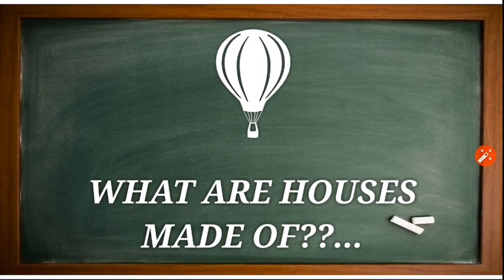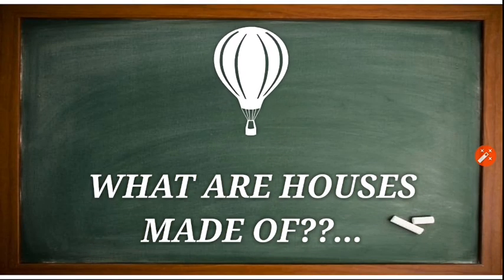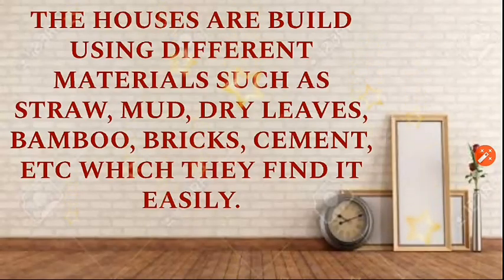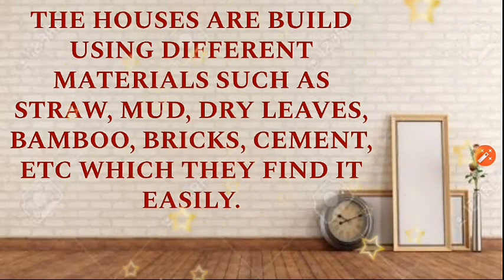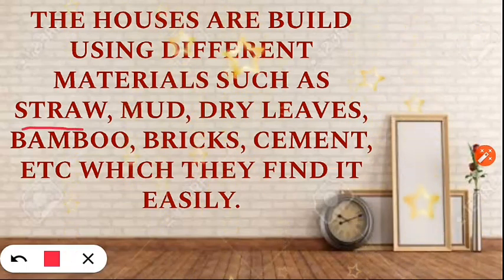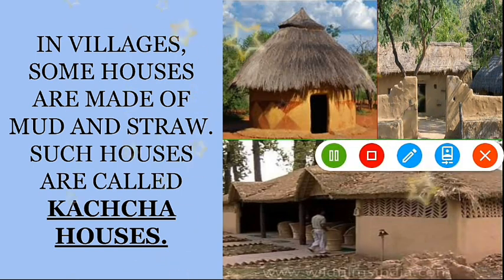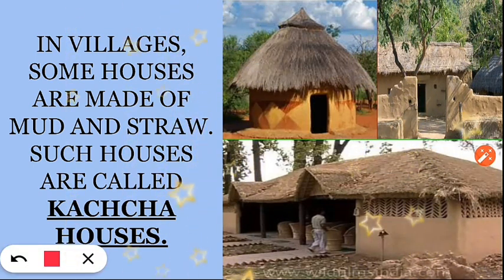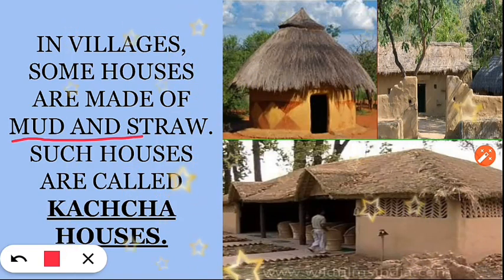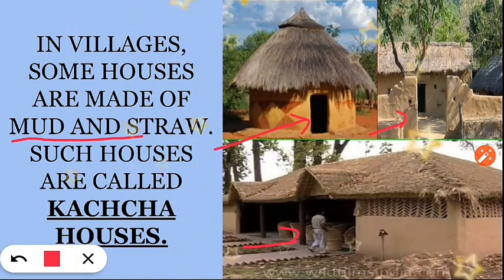Now let us know more about what houses are made of. People build their houses from materials which they find easily — like straw, mud, dry leaves, bamboos, bricks, cement, and more. In villages you will find houses that are made of mud and straw. These types of houses are called kaccha houses.